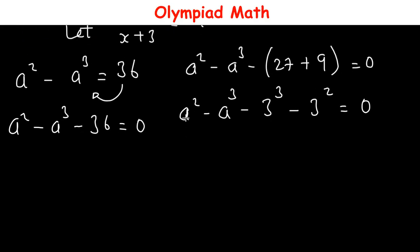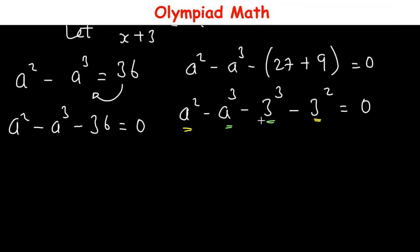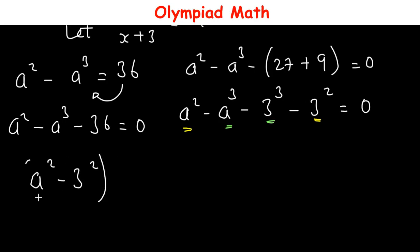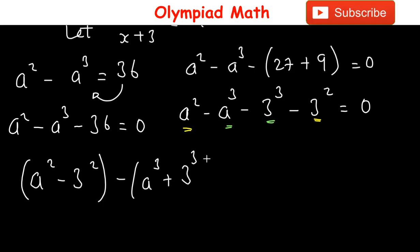Looking at the powers, we have a² and 3², and also a³ and 3³. We bring like powers together: (a² - 3²) minus (a³ + 3³) = 0.